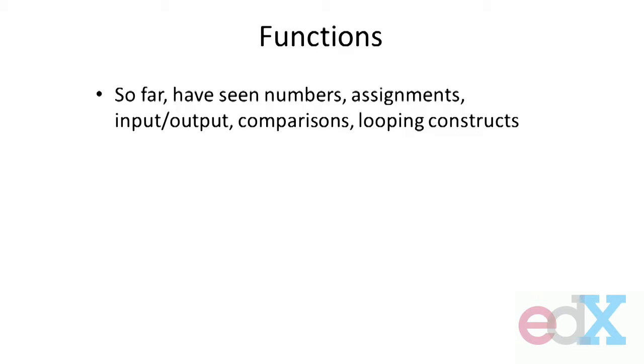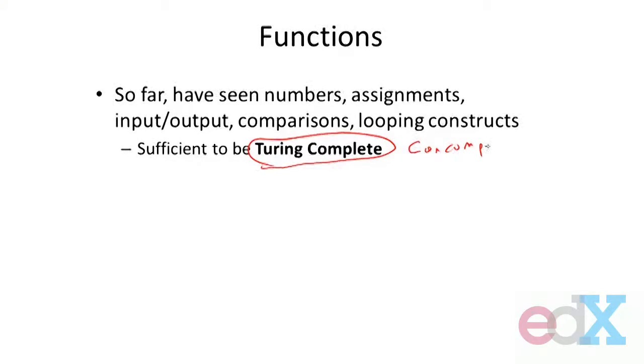With that set of tools, they turn out to be sufficient to give us what we call a Turing complete language. And what does that mean? It says, just with that set of tools, anything that's computable, we can compute. So we can compute anything. That's actually amazing.